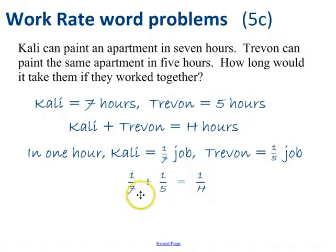So now let's put this information here together with Kali plus Trevin equals H. And we'll realize that one over seven, remember Kali was seven, Trevin was five, so if we're saying Kali is one-seventh and Trevin is one-fifth, then instead of H, I've got one over H. Now, you've learned back in middle school, and I hope even in elementary school, how to add fractions. You've got to find that lowest common denominator. In this case, that's thirty-five.